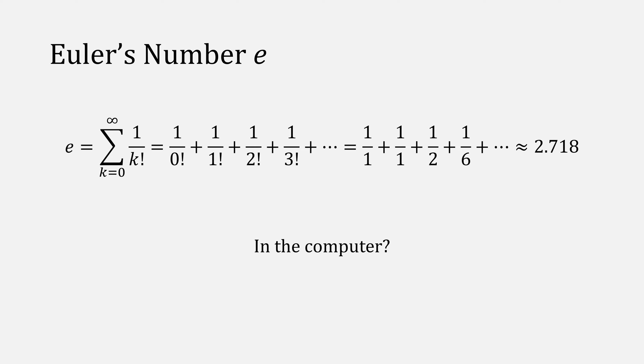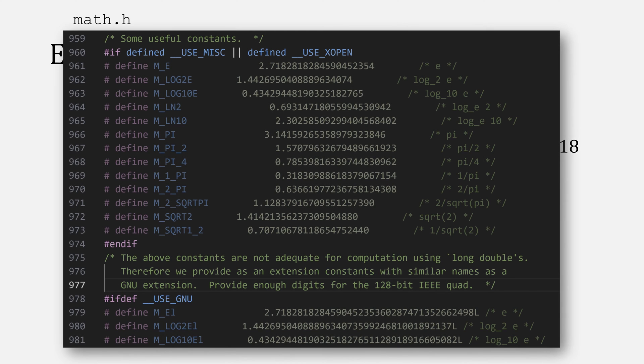First, we need to talk about Euler's number and how you actually compute it using this summation to be about 2.718. How does this work in the computer? The short answer is, it doesn't. Most of the time, you define E, for example in math.h, to be these numbers.